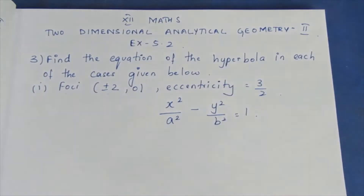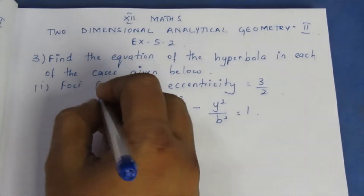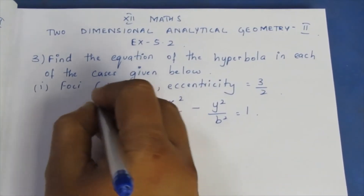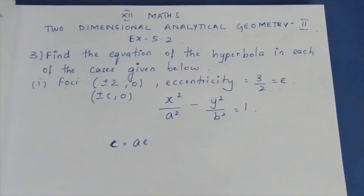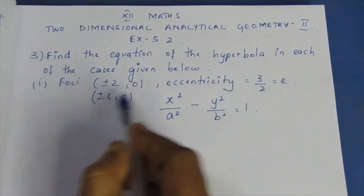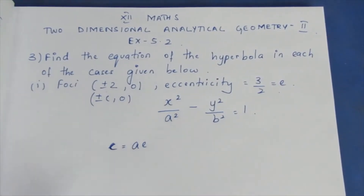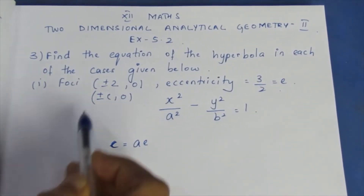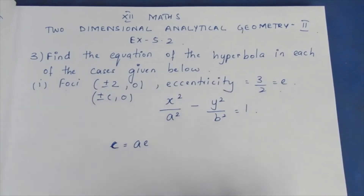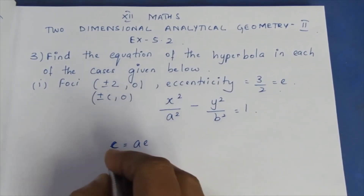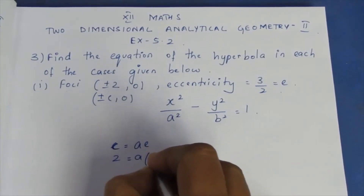The formula is given to make the sum easier. What is foci? Foci is plus or minus c, 0. Eccentricity is e. The relationship between c and e is: c is equal to a times e. So here c is 2, and e is 3 by 2. Substituting, c equals a times e, so 2 equals a times 3 by 2.